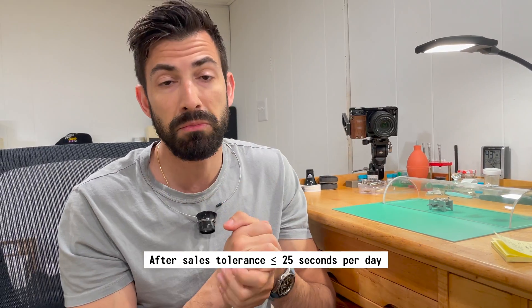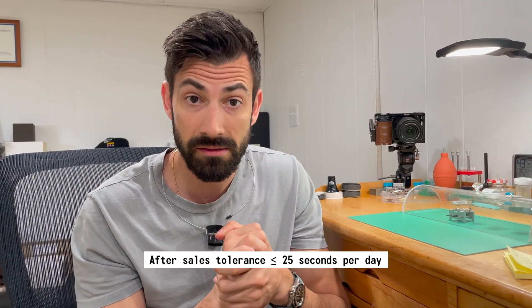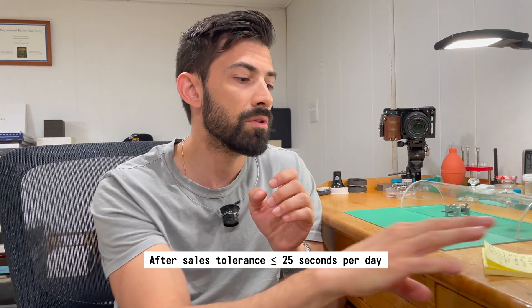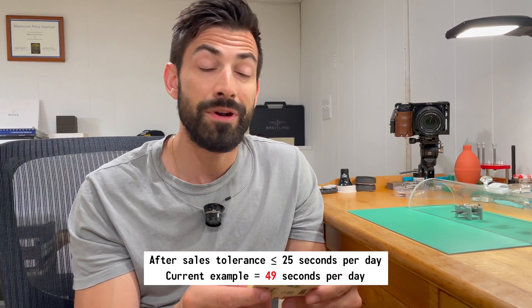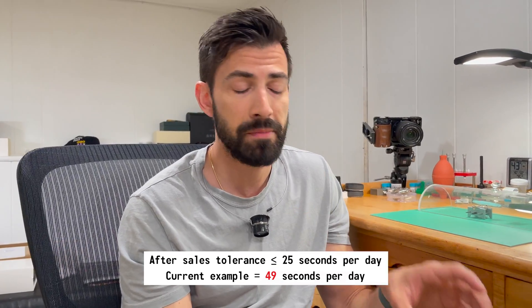So after sales tolerance for Rolex on the 1500 caliber movements like this one is a maximum acceptable delta of 25 seconds in five positions. So this one is 49 seconds, very, very high. It's way out of spec.